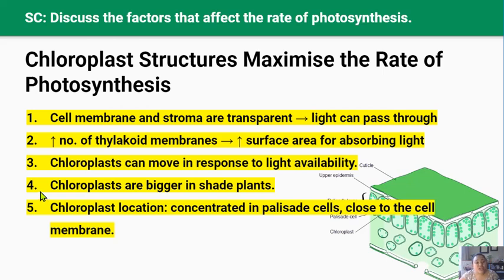Non-shade plants don't have large chloroplasts because enough light is being provided for them. Finally, palisade cells — which contain most chloroplasts — are found near the top of the leaf, packed tightly against each other to maximize the number of chloroplast-filled cells at the top. The chloroplasts are also pushed up against the cell wall by a large vacuole to minimize the diffusion distance for essential molecules like carbon dioxide and water to reach the chloroplasts.